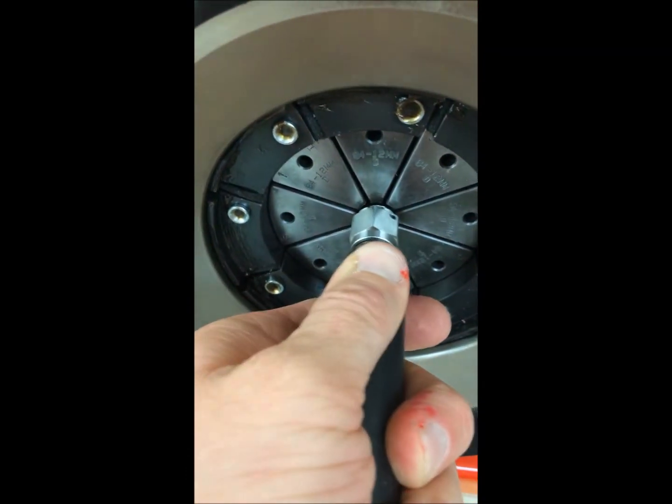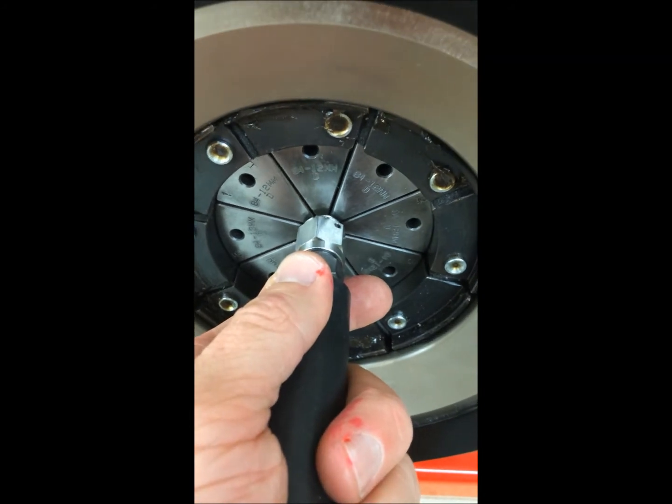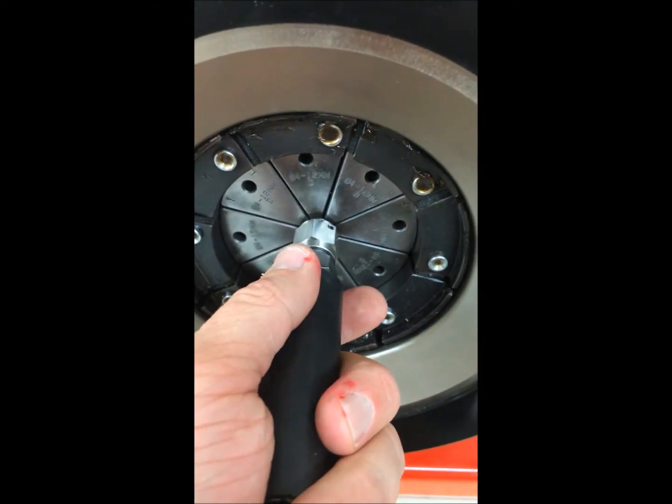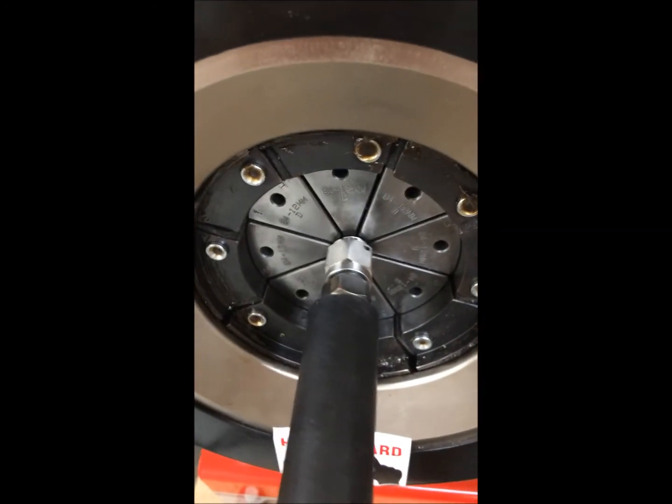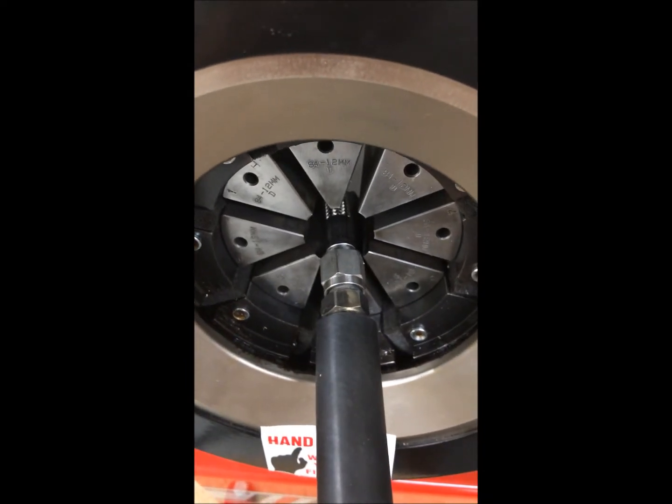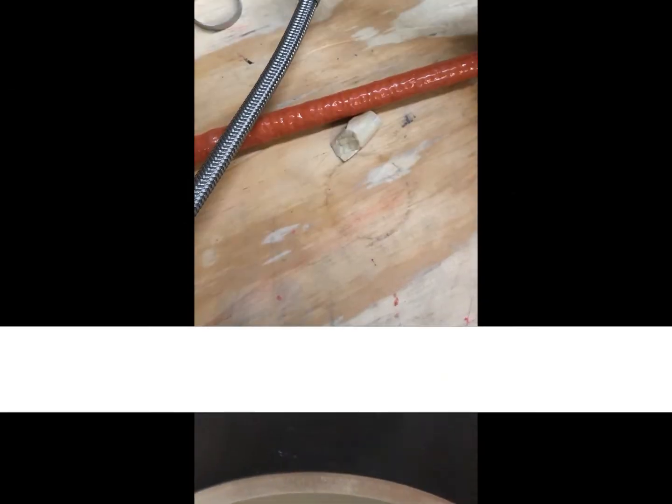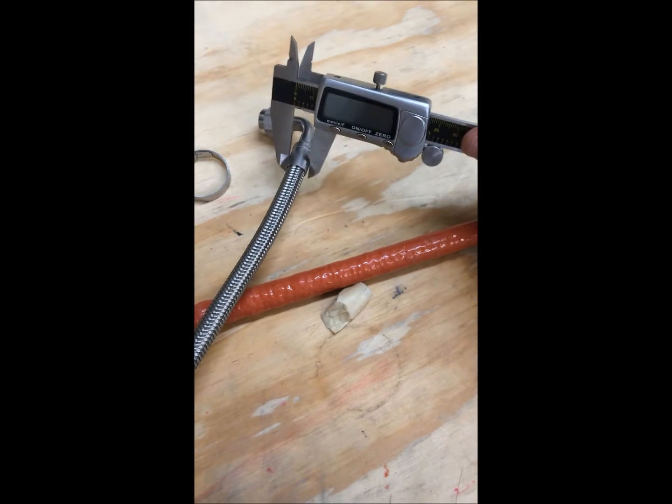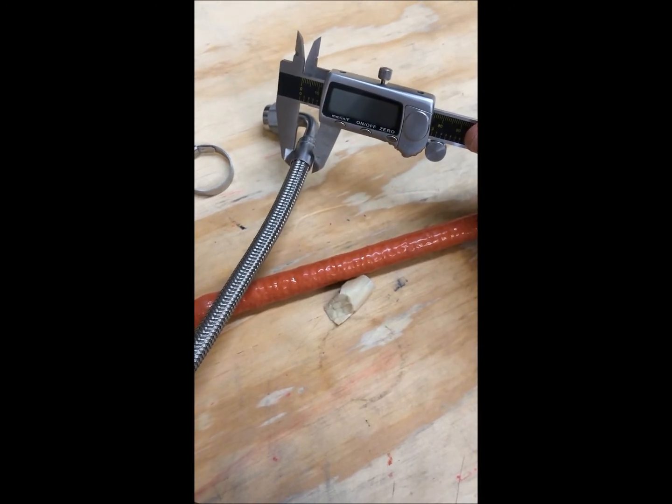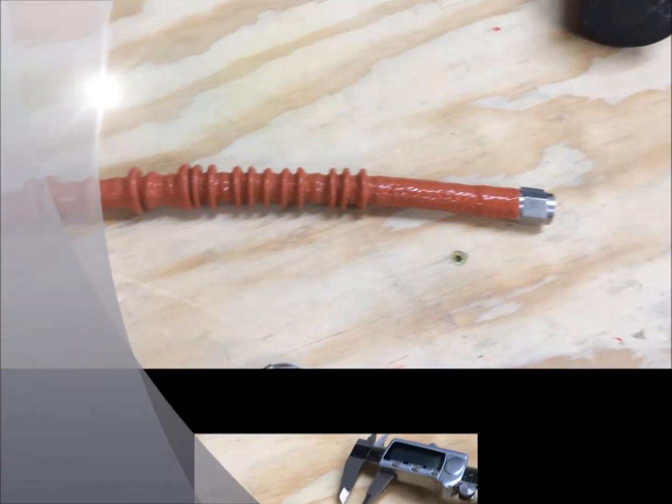Once we've done the initial crimp on the hose, we actually rotate the crimp fitting slightly and crimp it a second time. And the reason we do that is just to ensure that the entire collar is crimped evenly. Every fitting we crimp gets a micrometer put on it to verify that the tolerances are correct.